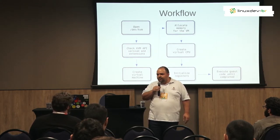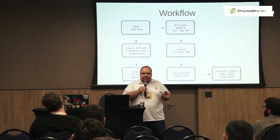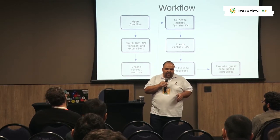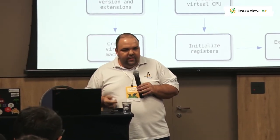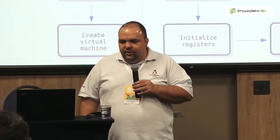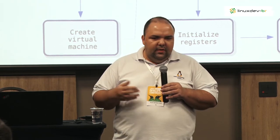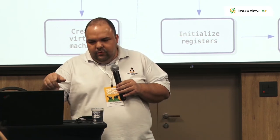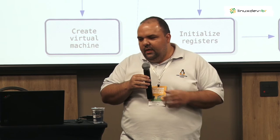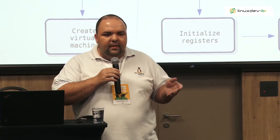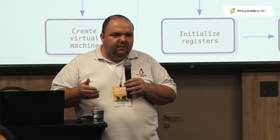I tried my graphics skills and created this workflow. You're going to realize that there is a standard sequence of calls to the KVM API that any application can make use of: open device, check for the version and extensions, create a virtual machine, allocate memory for the virtual machine, create a virtual CPU, initialize registers — specific for each architecture. On x86, for example, if you are running on another architecture like PowerPC or ARM, you will need to initialize those registers with the reset state for the CPU, and it's pretty much architecture-specific.